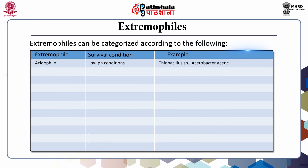Extremophiles can be categorized as follows. Acidophiles are microbes surviving under low pH conditions — examples include Thiobacillus and Acetobacter. Alkaliphiles are microbes surviving under high pH conditions.